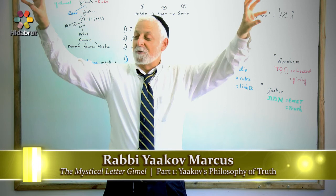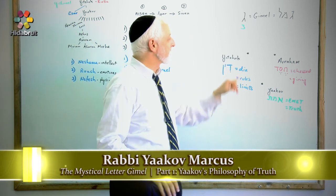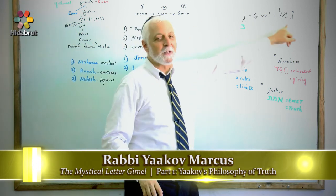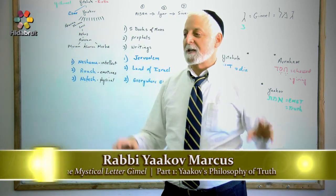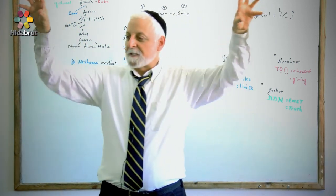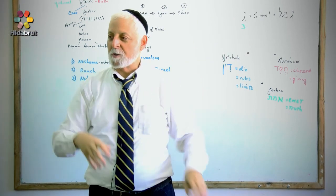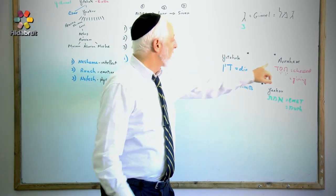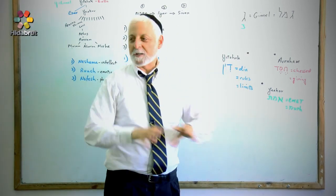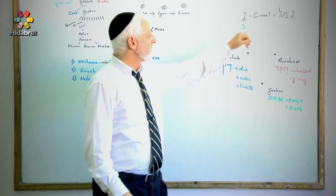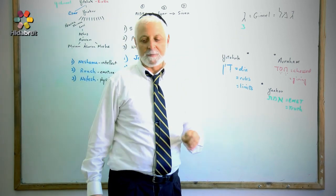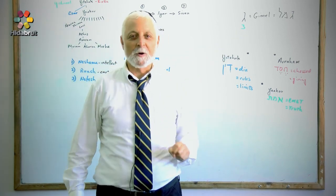So Yaakov becomes a glue to bring these opposites together — that's what Gimel is doing. Gimel functions like a glue to fix up disconnected two-ness so that we can function in a world where we see it's not totally disconnected. We'll continue with more on the letter Gimel tomorrow.